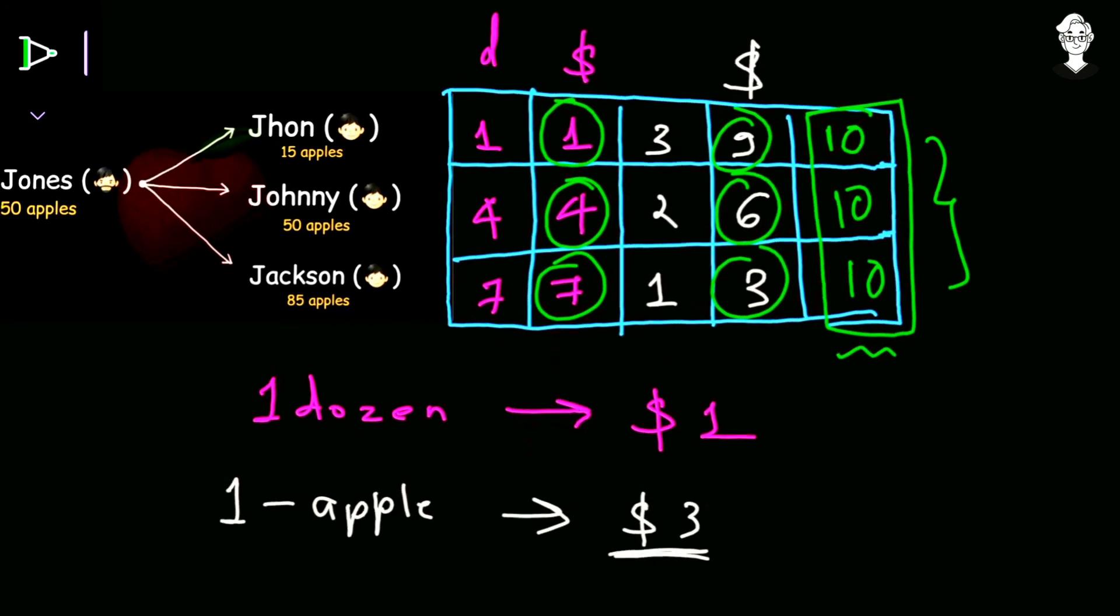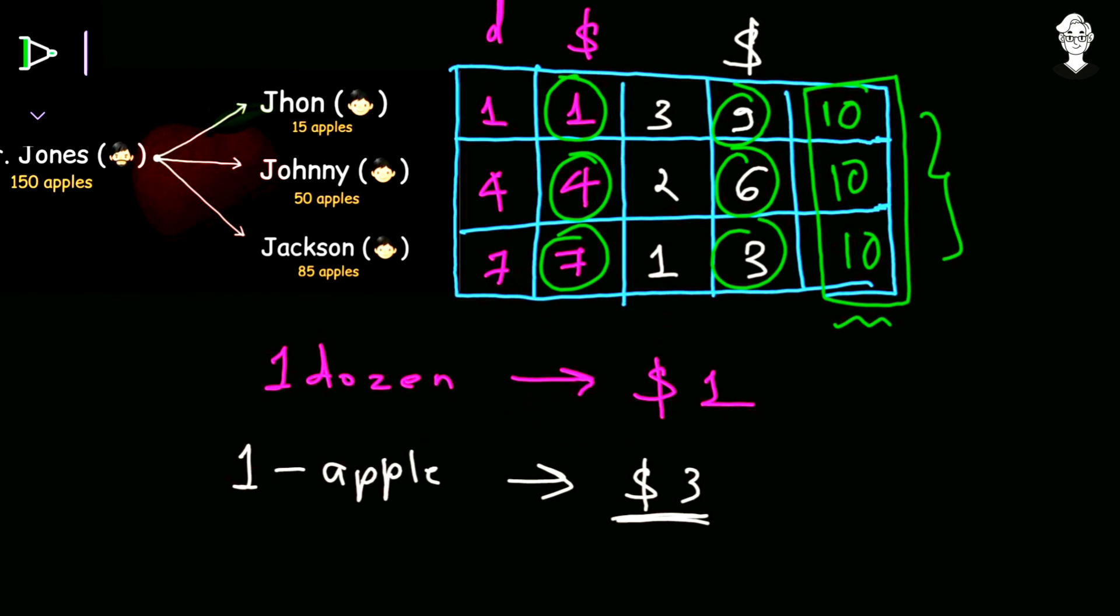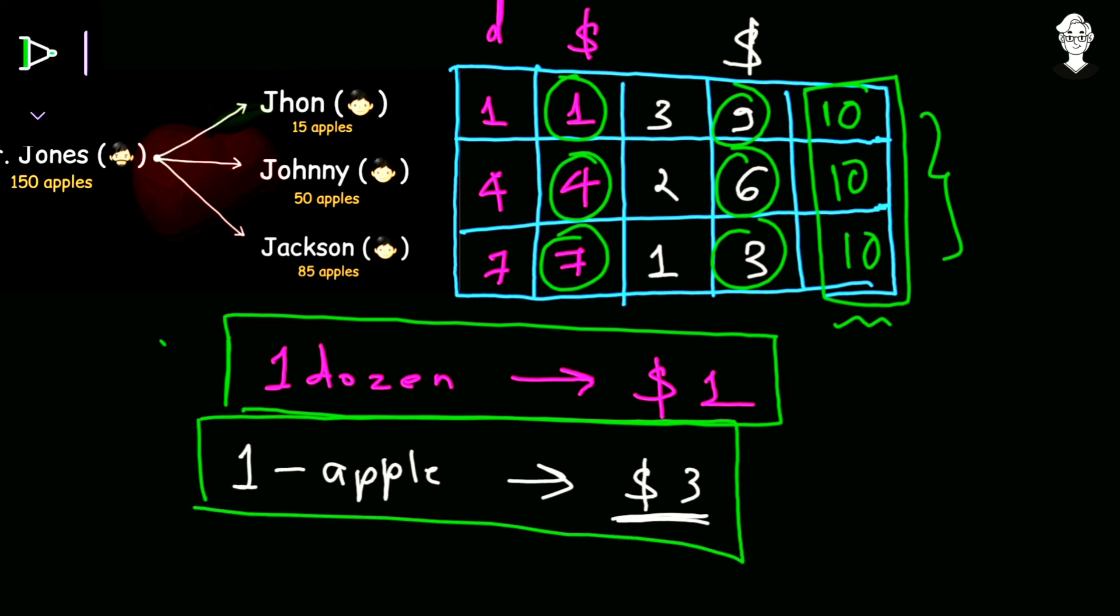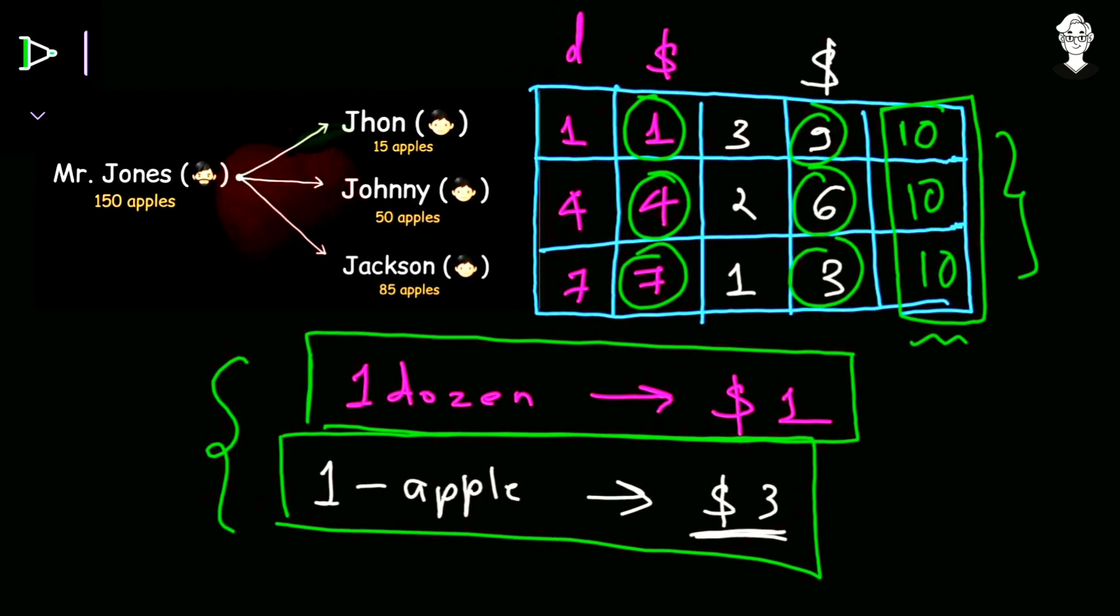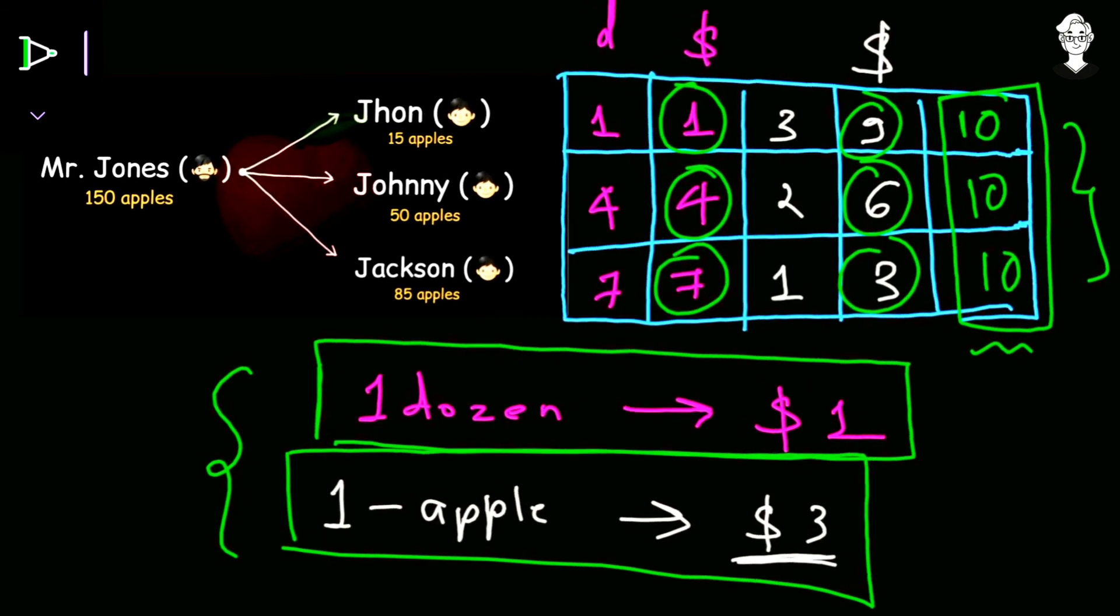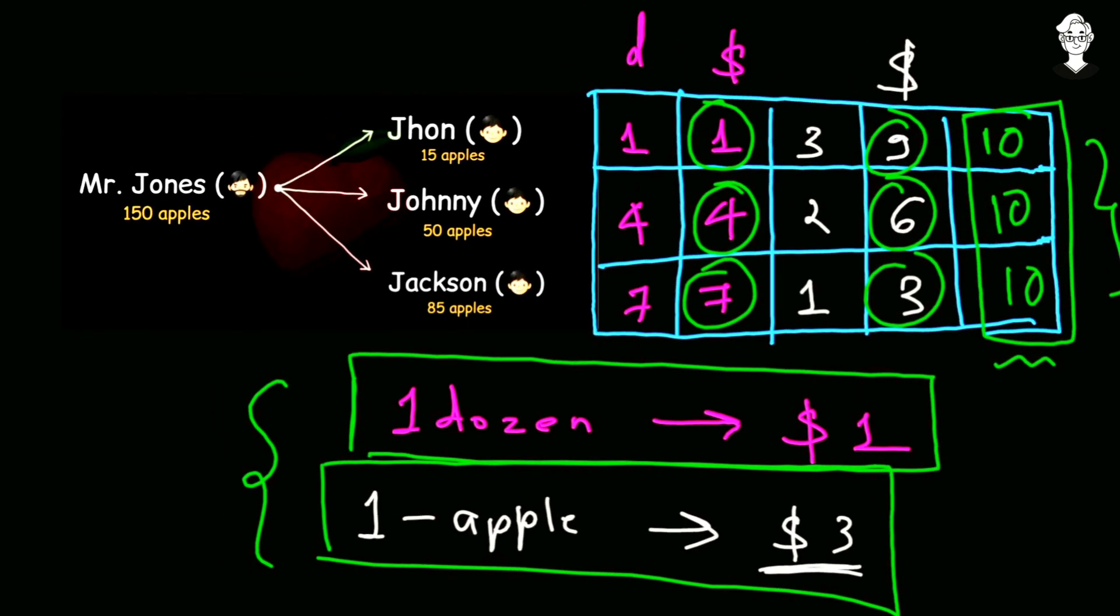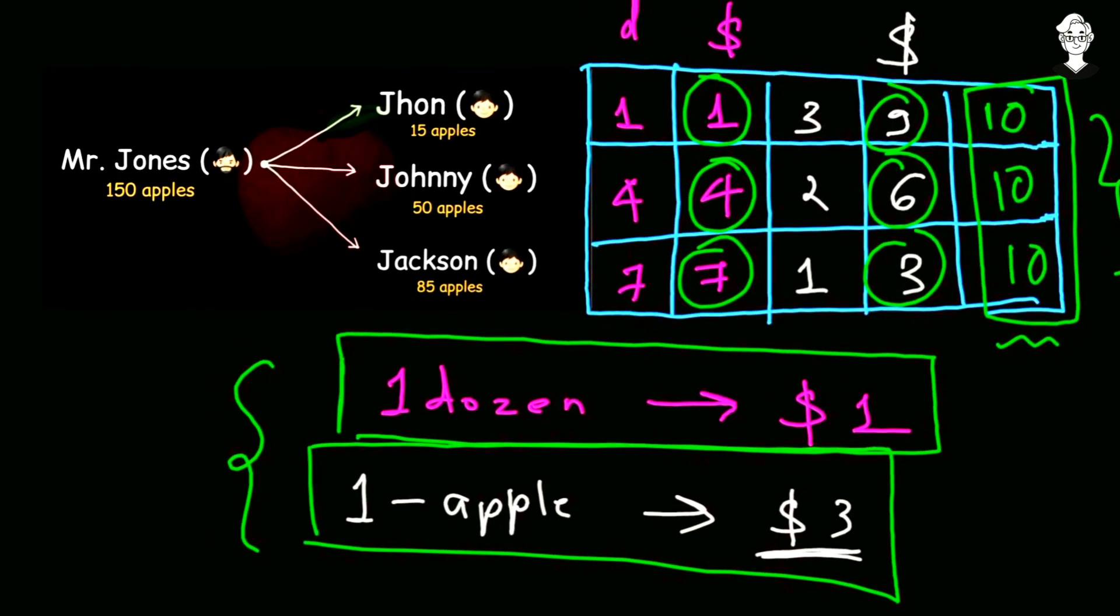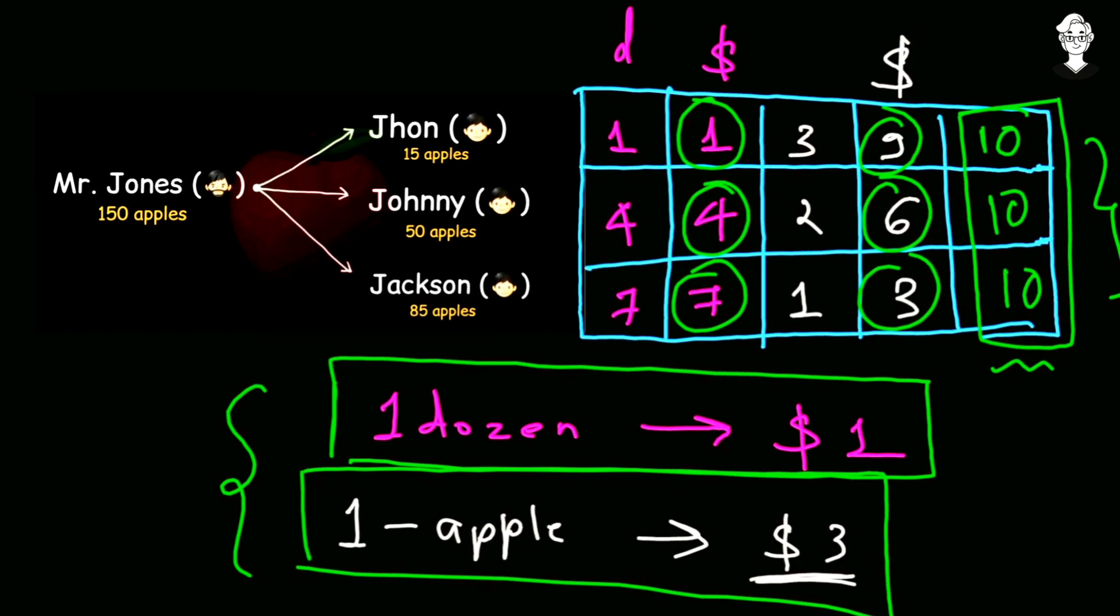What was important here is that you can observe one dozen, the price was fixed, that is $1. And after that, the price was fixed for one apple, that is $3, and this was fixed for all of them. So in the market, the prices among all the sellers should be same, then and only then the products are sold in the market.